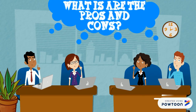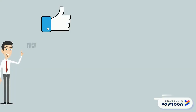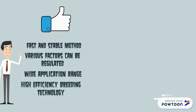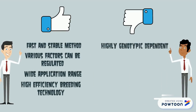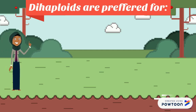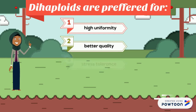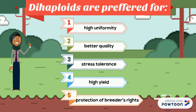What are the pros and cons? Pros: fast and stable method, various factors can be regulated, wide application range, high efficiency breeding technology. Cons: highly genotypic dependent, not all regenerated plants are haploid, development of the microspore might be interrupted. Dihaploids are preferred for high uniformity, better quality, stress tolerance, high yield, and protection of breeders' rights.